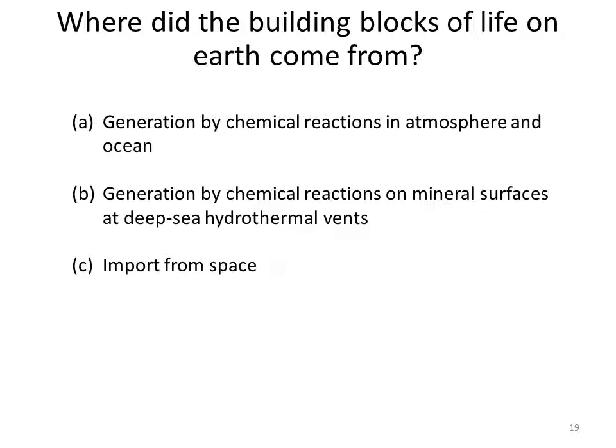The three sources are: A) generation of organic molecules by chemical reactions in the atmosphere and the ocean; B) generation on mineral surfaces at deep sea hydrothermal vents; and C) import of organic molecules from space. Now let us look at the evidence for these sources of organic molecules on early Earth.